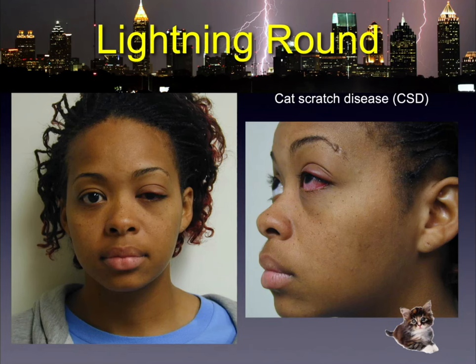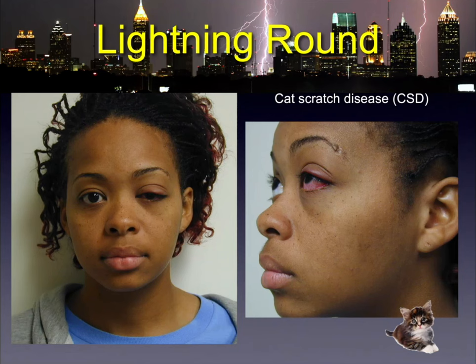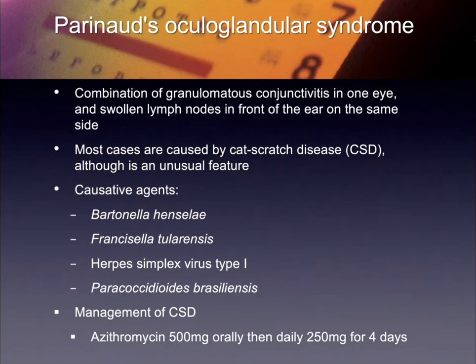Did the cat scratch her eyeball? No — cats groom themselves, they lick themselves all over, and she was holding the cat there. It's just a contact. The lymphadenopathy gave it away, and we confirmed with serology. Serology used to take months when I was a resident — they'd send it to an outside lab and you'd never see it again. Some of the things to think about with Parinaud's oculoglandular syndrome: granulomatous conjunctivitis in one eye with an ipsilateral preauricular lymph node. Consider Bartonella, but that's not a complete list of causes.